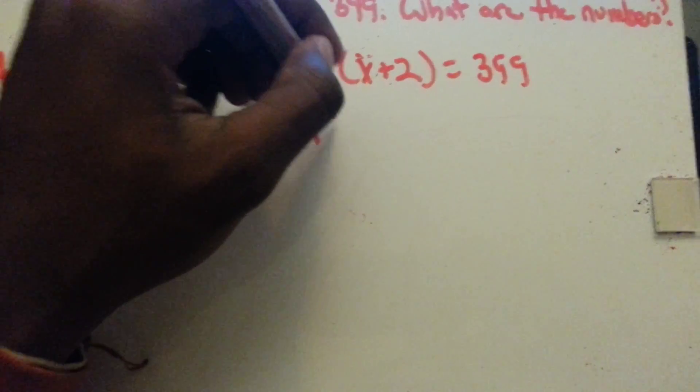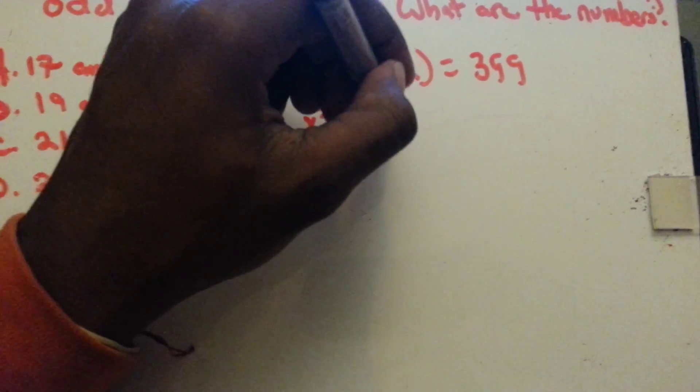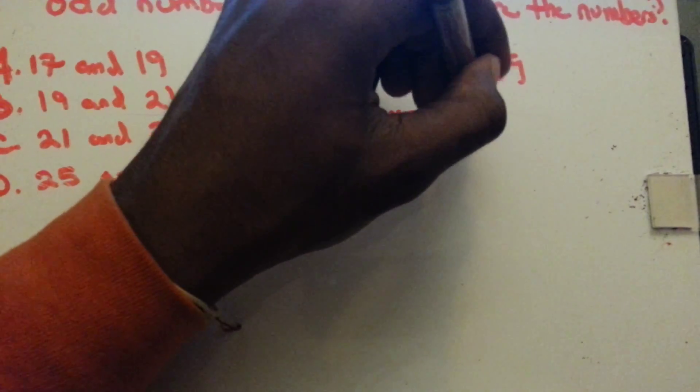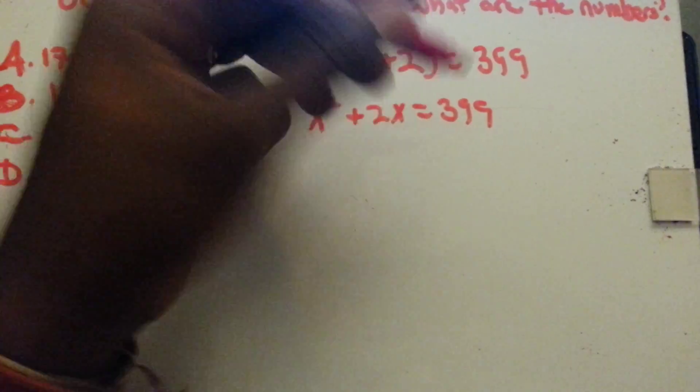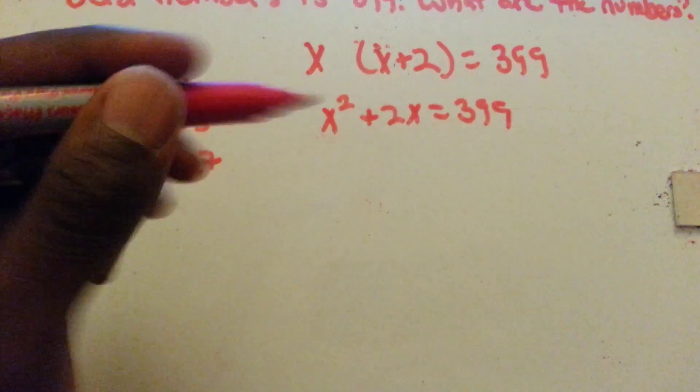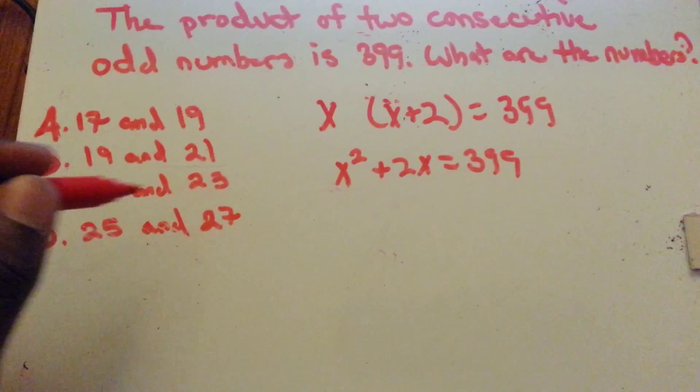You have x squared plus 2x equals 399, and then you'd have to factor out and figure it out. But that's way too much work for me.